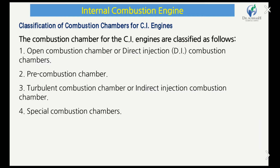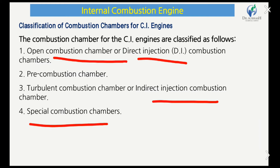The combustion chambers for CI engine are classified as follows: first, open combustion chamber or direct injection combustion chamber; second, pre-combustion chamber; third, turbulent combustion chamber or indirect injection combustion chamber; and fourth, special combustion chamber.